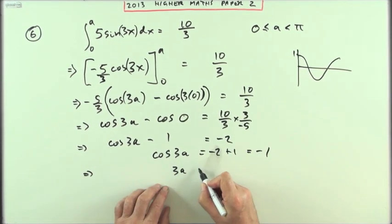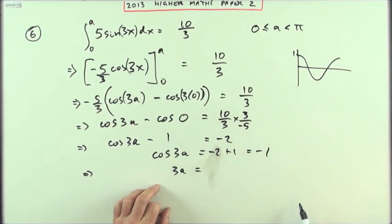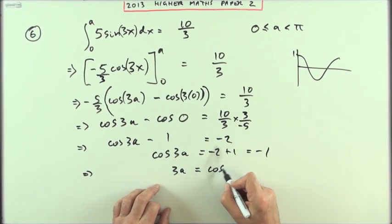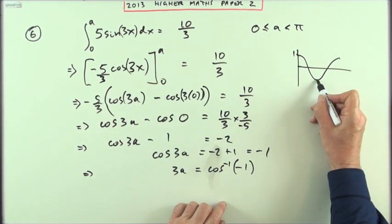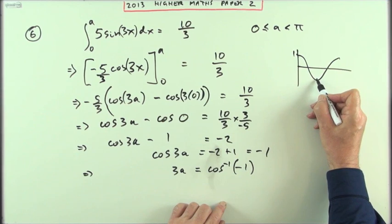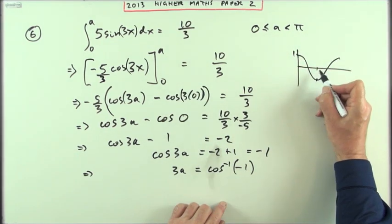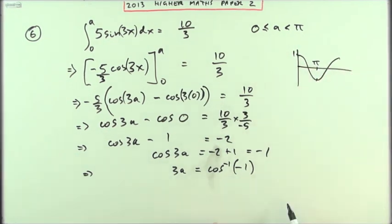And the last part is, well, negative 1's a point in the graph. I'll write this bit down, maybe unnecessarily, so 3a will be inverse cos of that. Now this only happens once. You only get down to negative 1, remember it's in radians, halfway along, at pi. So that means 3a should equal pi.